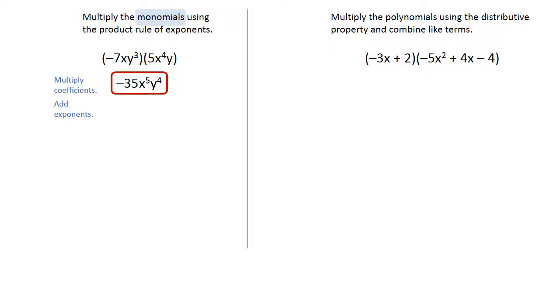In the second example, we're going to multiply polynomials. The difference is there are pluses and minuses here, and we have to treat this differently. So we're going to use what we're calling the box method.